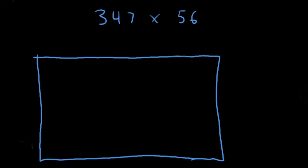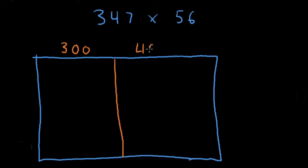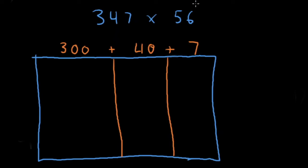Time for our second problem: 347 times 56, using the same area model approach — just a bit more challenging because now we have a hundreds place value. Let's break 347 apart: we have 300s, so put 300 up here; we have four tens, giving us 40; and we have seven ones, giving us 7. Small addition symbols: 300 plus 40 plus 7 equals 347.